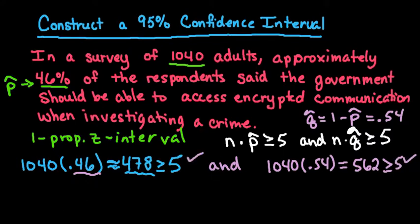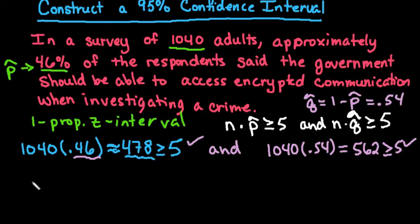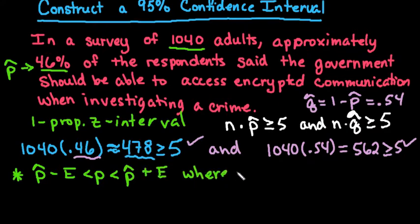Since both of those are met, we can go ahead and continue. The formula that we're going to use - there are different formulas depending on the textbook. One uses this formula where I take p-hat minus E, and our population proportion is going to be between p-hat minus E and p-hat plus E, where E represents the margin of error. The error is calculated by z_c, which is our z-score that corresponds to this level of confidence, times the square root of p-hat times q-hat over n.